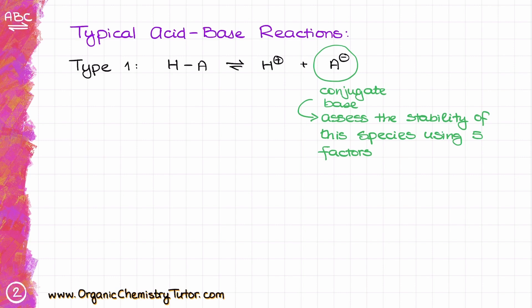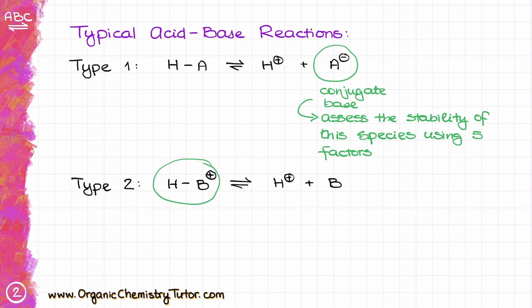There is also Type 2, where you have a positively charged starting material HB+, which dissociates into H+ and a neutral conjugate base B. In this case we focus on the stability of the starting material acid, using the same five factors. Since Type 1 is significantly more common, in this video I'm going to solely focus on Type 1.